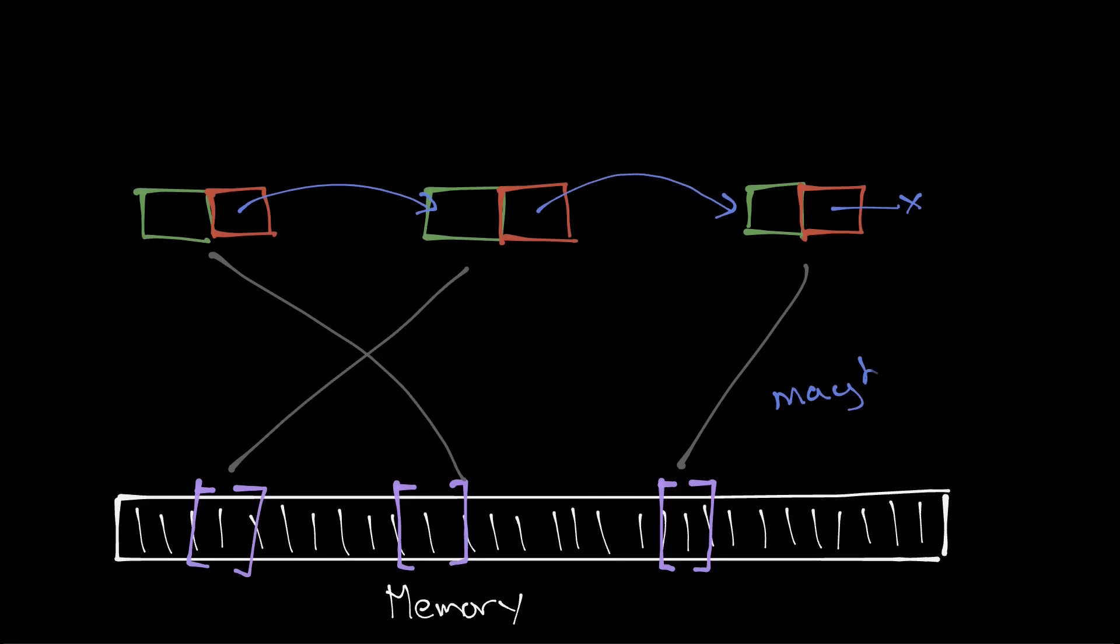You start at the head node, and move to the next item in the chain. You look at the next pointer, i.e. the address of the next node, and you continue following these pointers over and over until you reach the one that points nowhere.